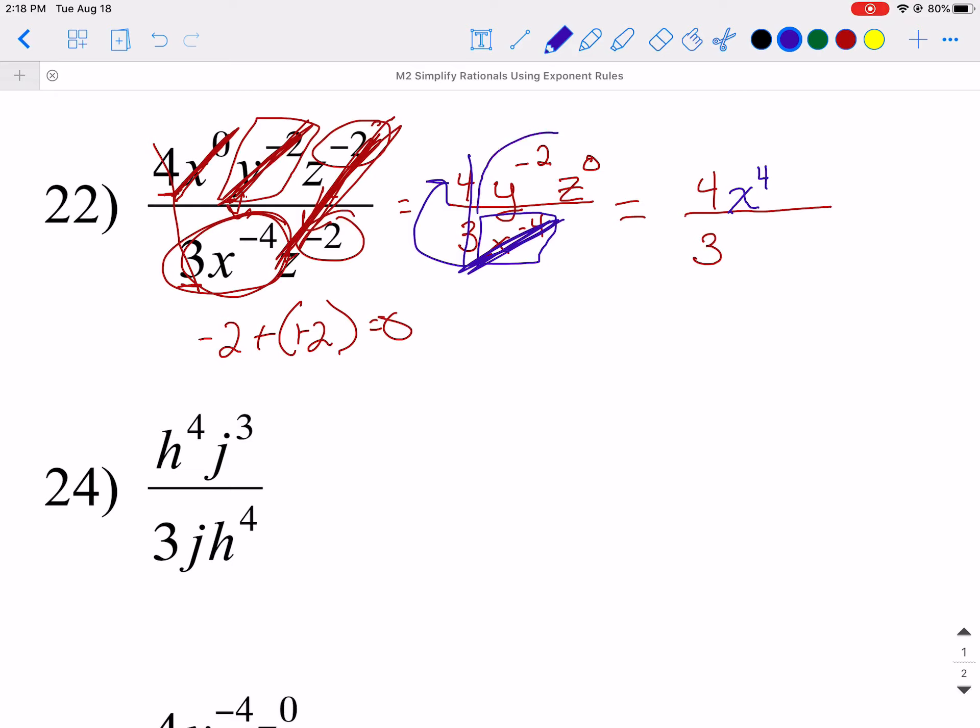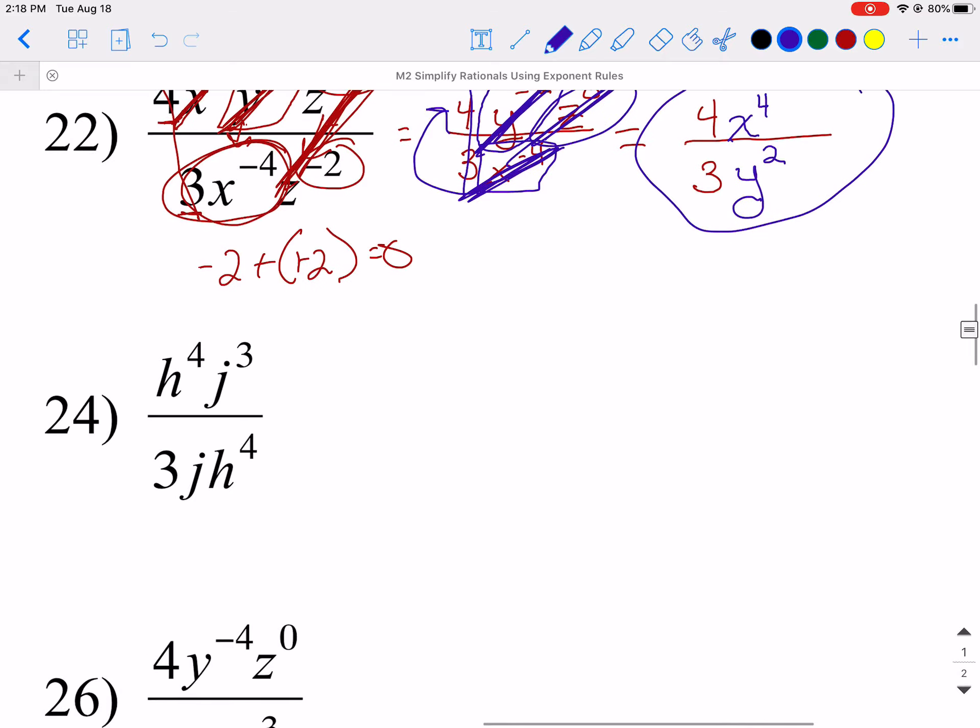Now I'm going to do my y. y to the negative 2. It's up top to start with. The negative causes it to flip. Go to the bottom, lose the negative, and keep the exponent of 2. And then I've got z to the 0. And we know that anything raised to the 0 power is 1, so there's your answer right there. Hopefully you followed that and you were good with that.